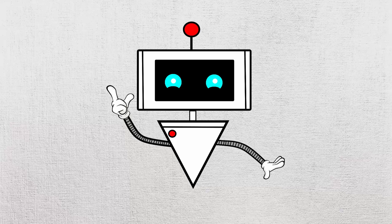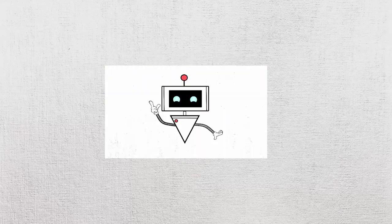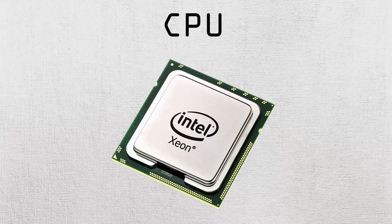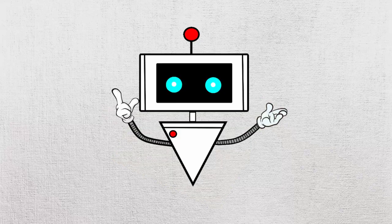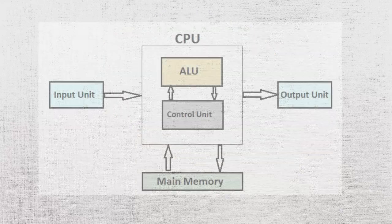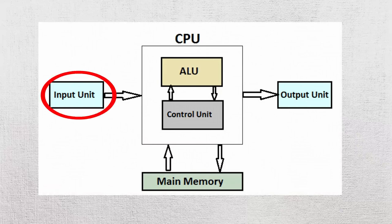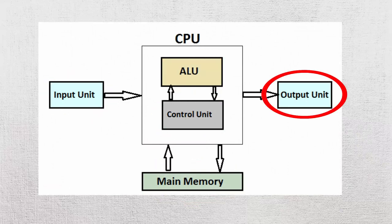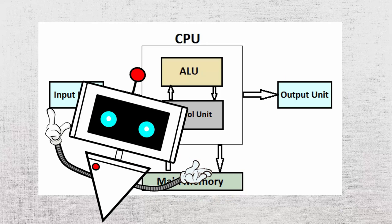Hey there and welcome back to another video. Last time we did a brief run through of all the main computer components. Now we're going to do a more detailed explanation of each component, and here for our first component is the CPU. Like I said in the previous video, the CPU is the brain of the computer and is where all the main computations take place. The CPU can be broken down into five parts: the input, ALU, control unit, memory unit, and the output. In this video we're going to go through each part in much more detail than in the last video, so let's go.